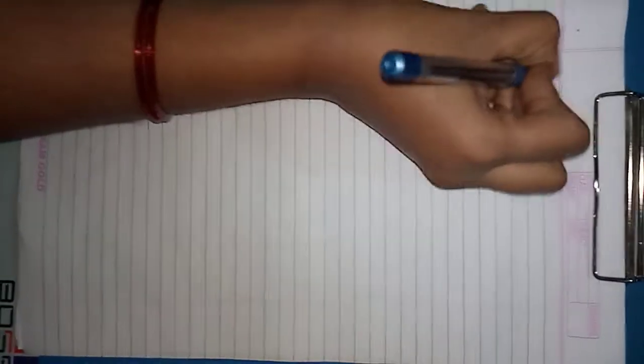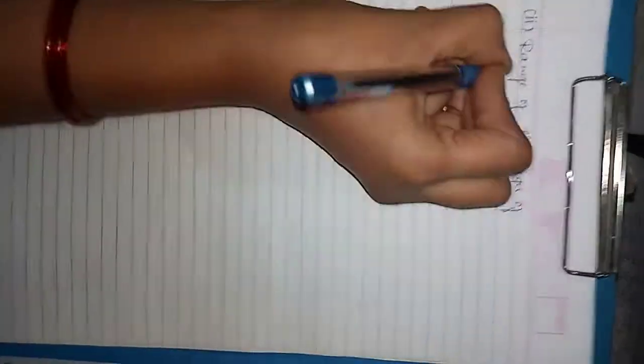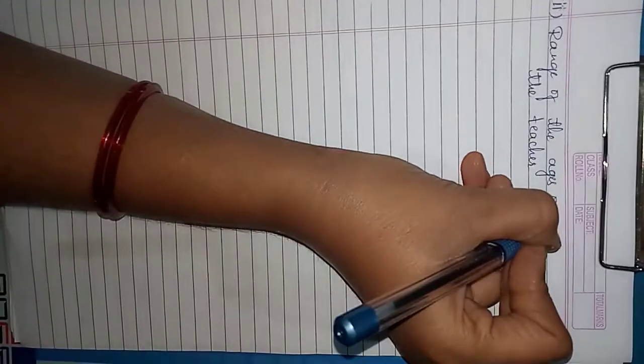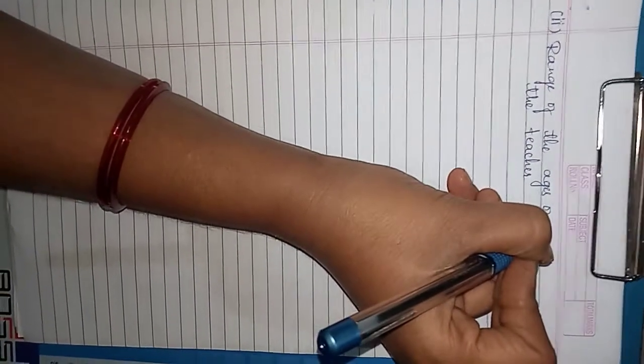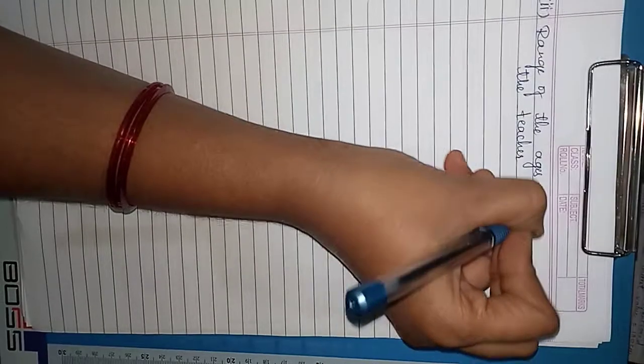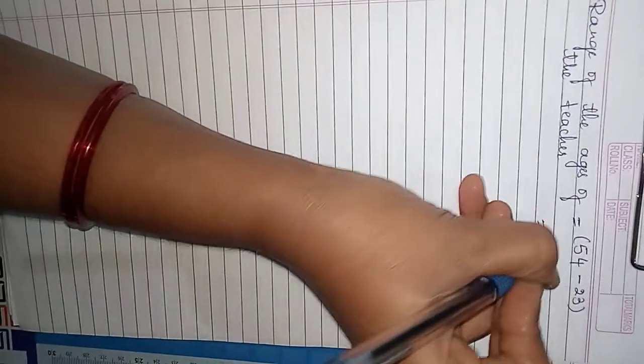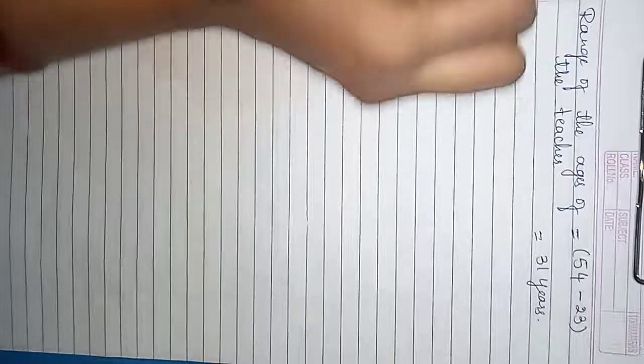Second: find the range of the ages of the teachers. Range is the difference between the highest and the lowest observation. The highest observation is 54 and the lowest is 23. So 54 minus 23 gives 31 years. Therefore, range is 31.